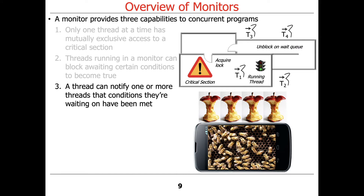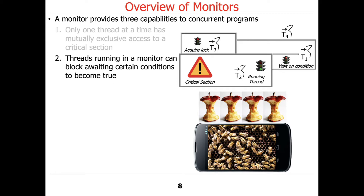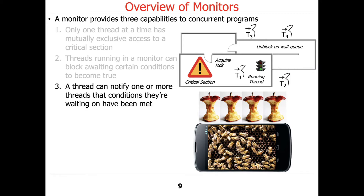A monitor also allows a thread to notify one or more other threads that the condition or conditions they're waiting on have been met. Thread T2 added an element to the queue, then left the critical section, which allowed thread T1 to unblock on the wait queue, reacquire the lock, and get back into the critical section to do its thing.